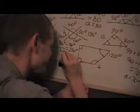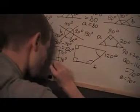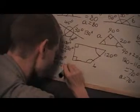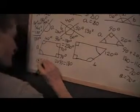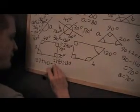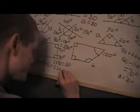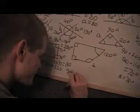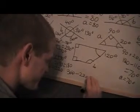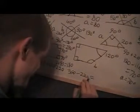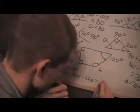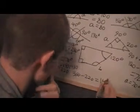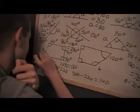Next ones here. These two angles are 90 degrees each, so 2 times 90 is 180. Then we've got a 40 here, so we've got 180 plus 40, which is 220. We're going to subtract that from 360. So this angle A here is 140 degrees.